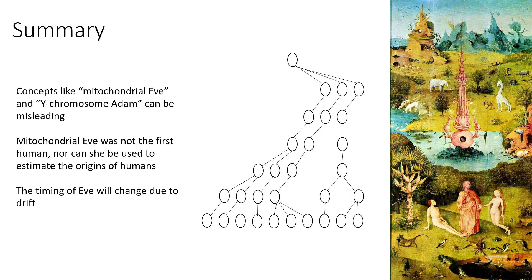So what can we take away from all of this? So concepts like mitochondrial Eve and Y chromosome Adam are very, very misleading. They're misleading because they're using, they're borrowing phrases from the book of Genesis, which literally means the first man and first woman. But that's not what they mean in a coalescent context. They just mean the last common ancestor of the descendant lineages.